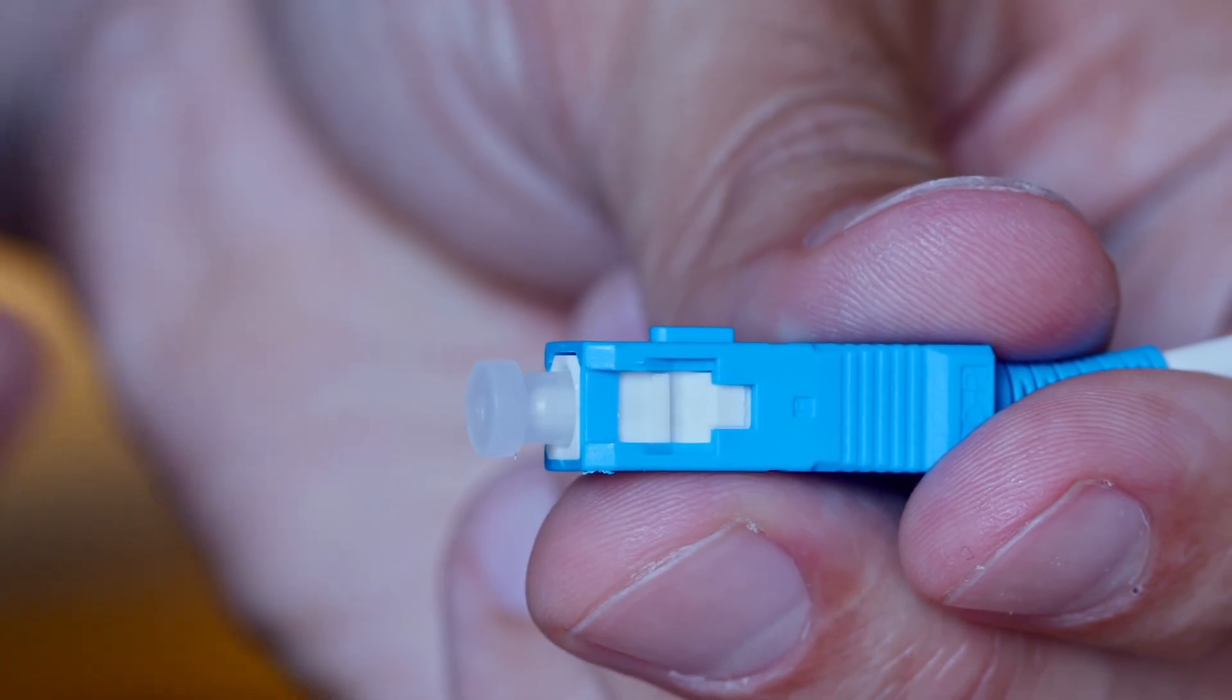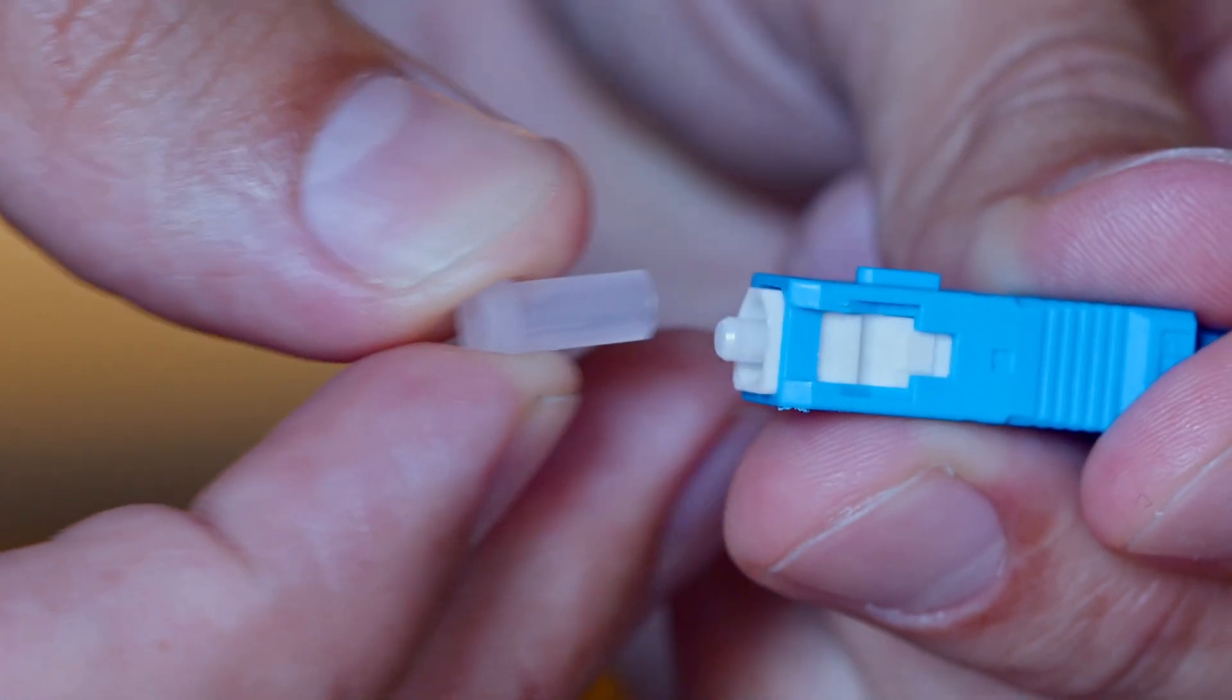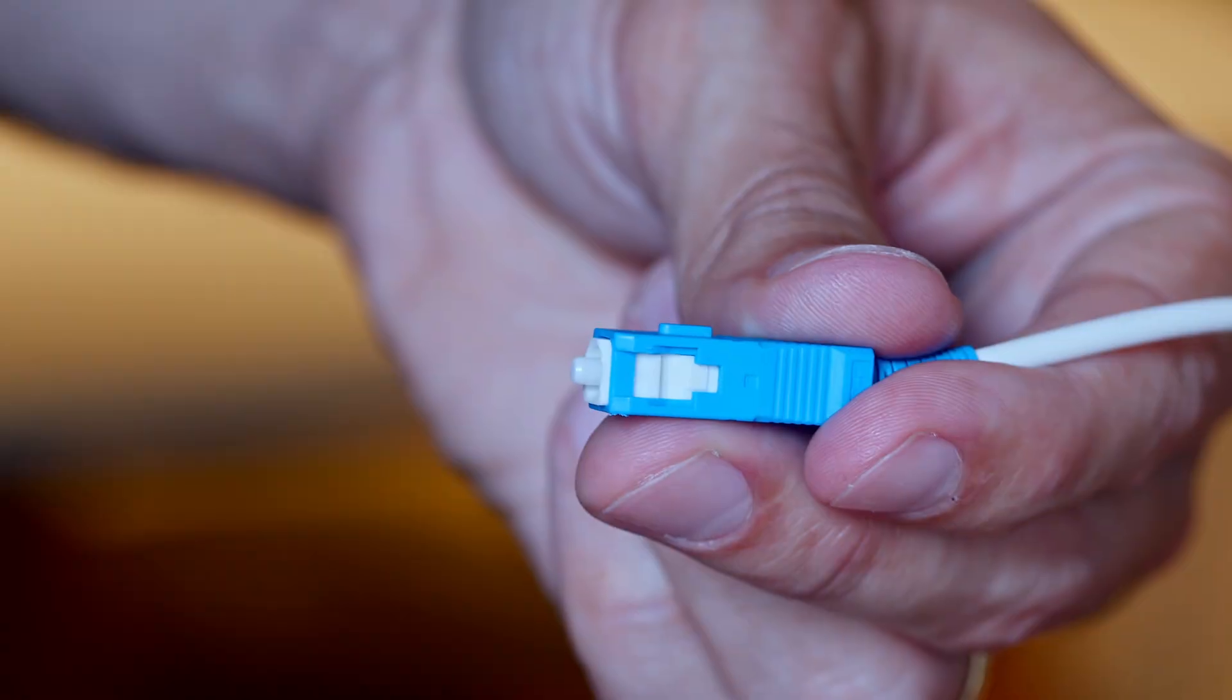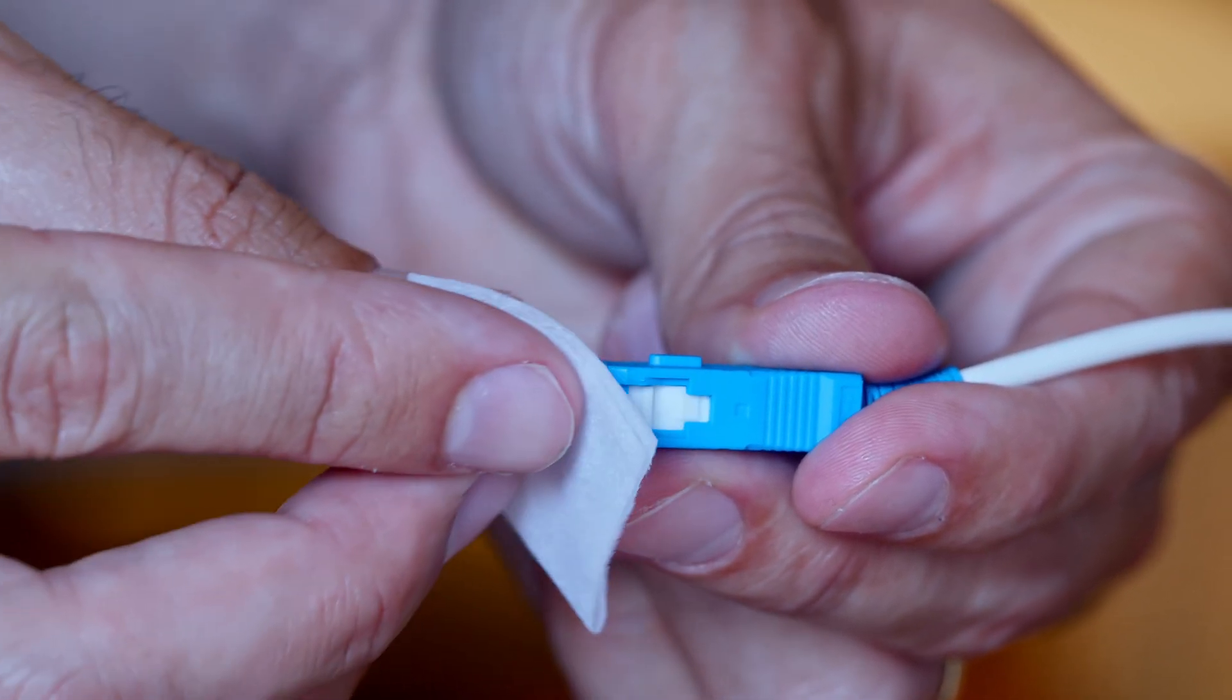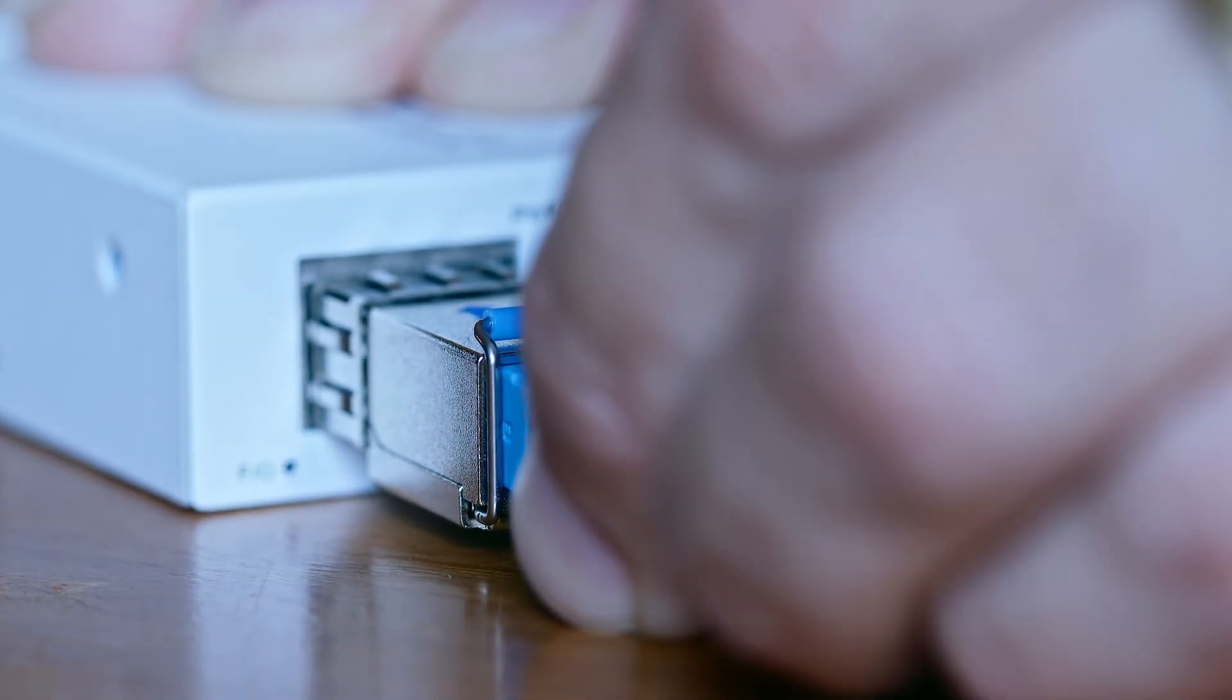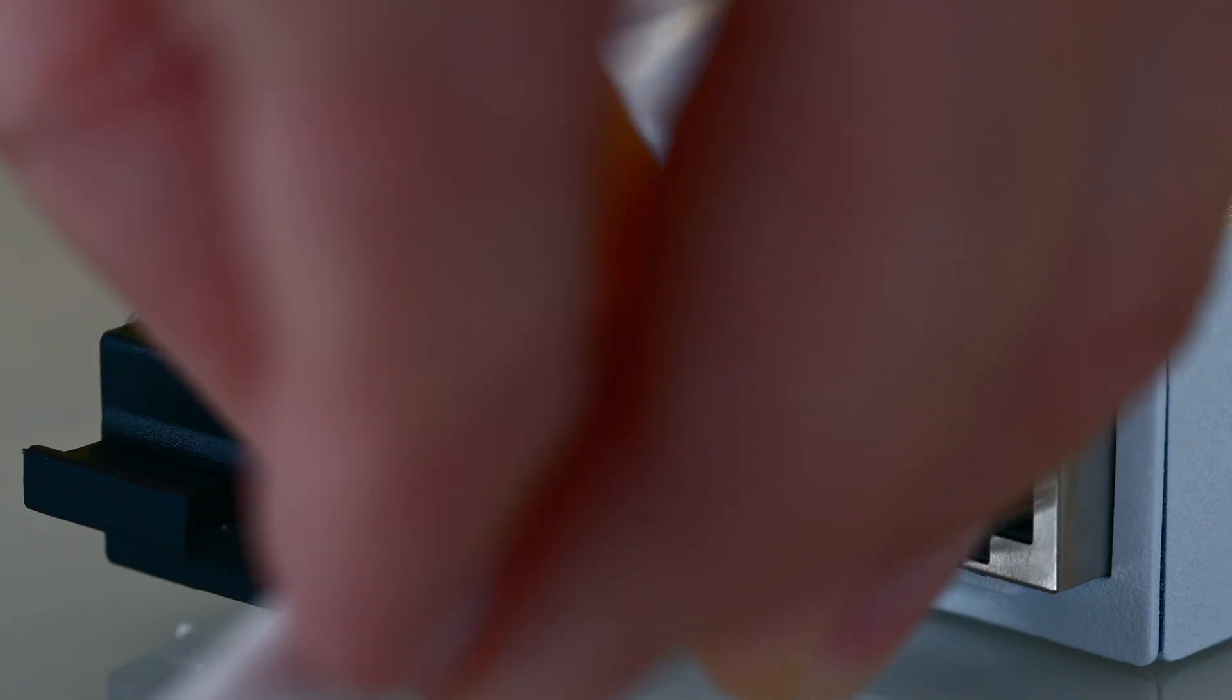Remove the protective cap from the fiber connector. Avoid touching the tip of the connector with your fingers, as skin oils and dirt can reduce optical signal. Use one of the isopropyl alcohol wipes to clean the ends to be connected. Without touching the fiber tip, insert the fiber connector into the media converter, taking care to align the notch with the slot. Repeat the same steps for the other fiber end.